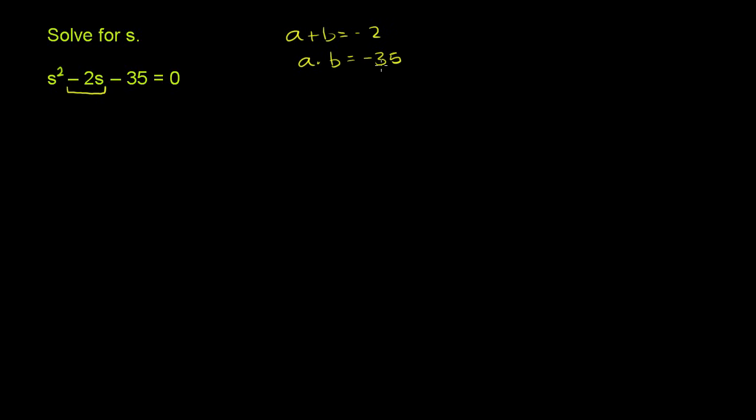Since the product is a negative number, one has to be positive, one has to be negative. If you think about it, ones that are about two apart, you have 5 and negative 7. I think that'll work. 5 plus negative 7 is equal to negative 2.